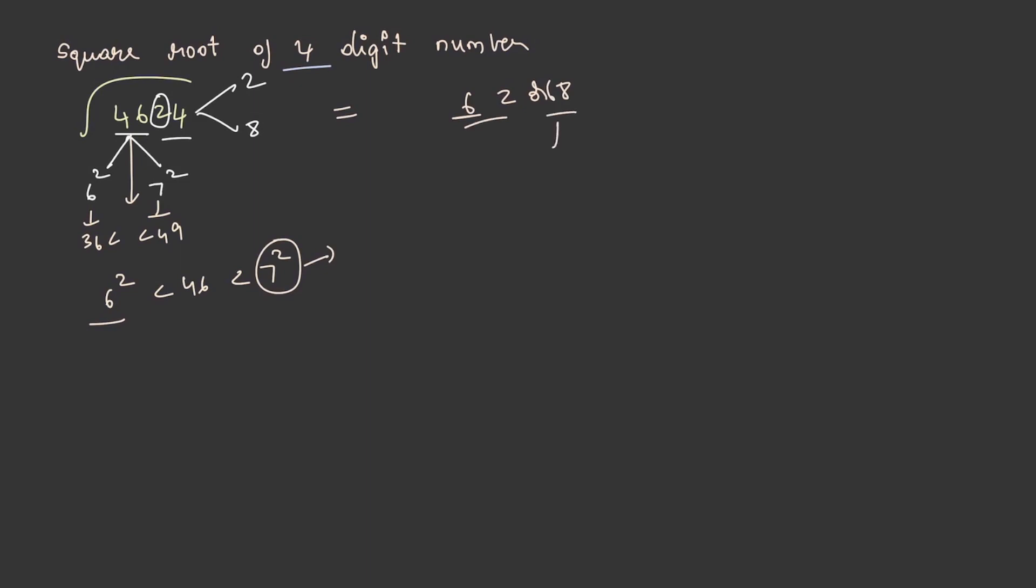Let us find out which of these is the right option. There are only two possibilities to be the square root of 4624. To understand which of these is the right option, let us take the product of 6 and 7. As 46 lies in between squares of 6 and 7, let us multiply these two, that is 6 × 7 = 42.